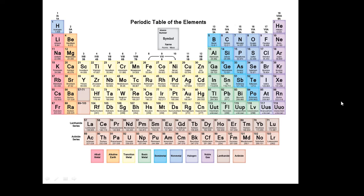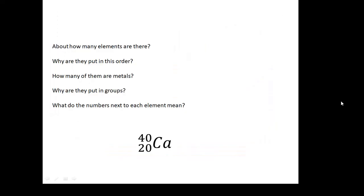So we don't need to know all of this. There are some basics that we should know about: how many elements are there, why are they put in this order, how many of them are metals, why are they put in groups, and what do the numbers mean? There's a big number and a little number. What do they mean?